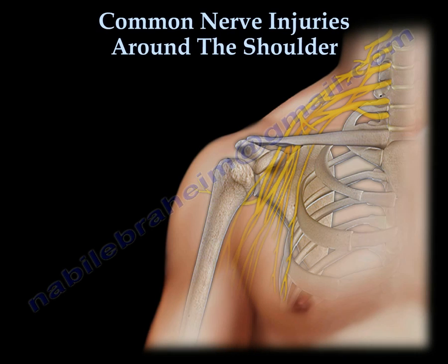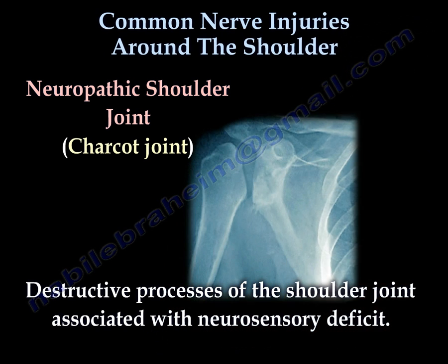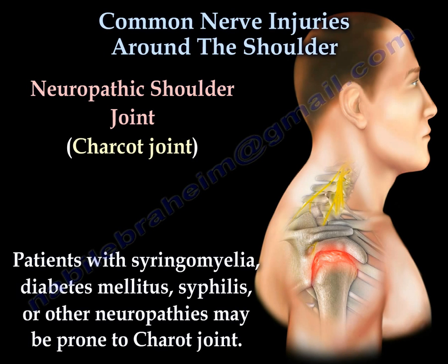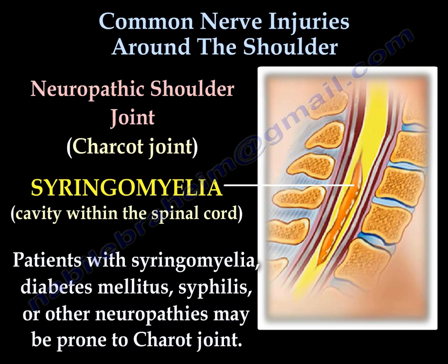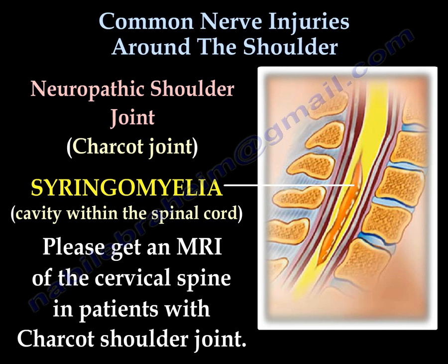Neuropathic shoulder joint — we call it the Charcot joint. It is a destructive process of the shoulder joint associated with neurosensory deficit. Patients with syringomyelia of the spine, diabetes, or other neuropathies may become prone to Charcot joint of the shoulder. Syringomyelia is a cavity within the spinal cord. Please get an MRI of the C-spine in patients with a Charcot shoulder joint.